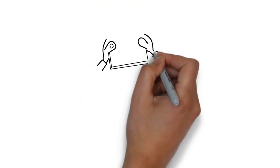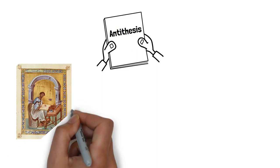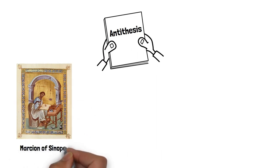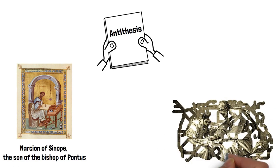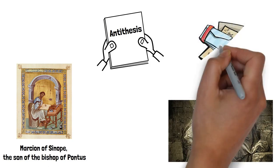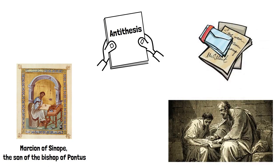The book, simply titled Antithesis, was written by Marcion of Sinope, the son of the Bishop of Pontus and famous explorer, who had spent decades retracing the travels of Paul the Apostle and gathering all of his original epistles and his Gospel of the Lord.